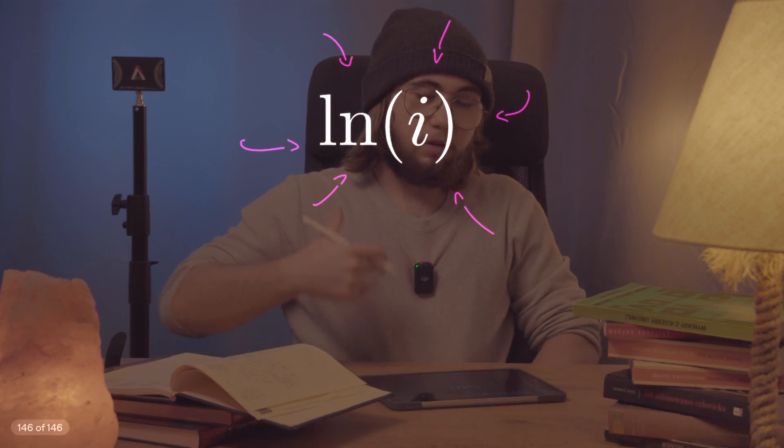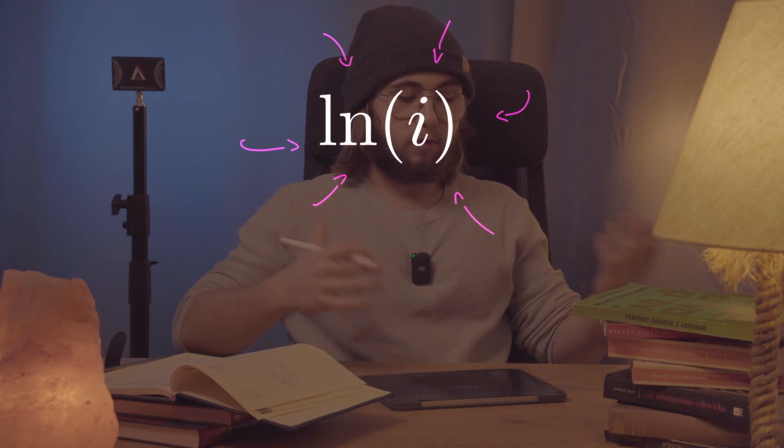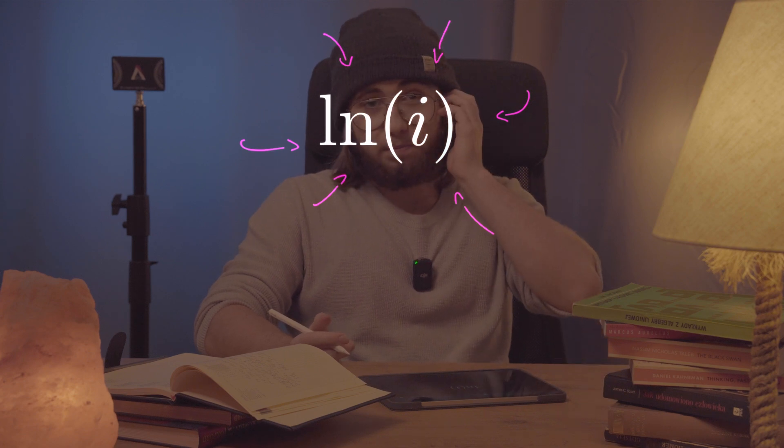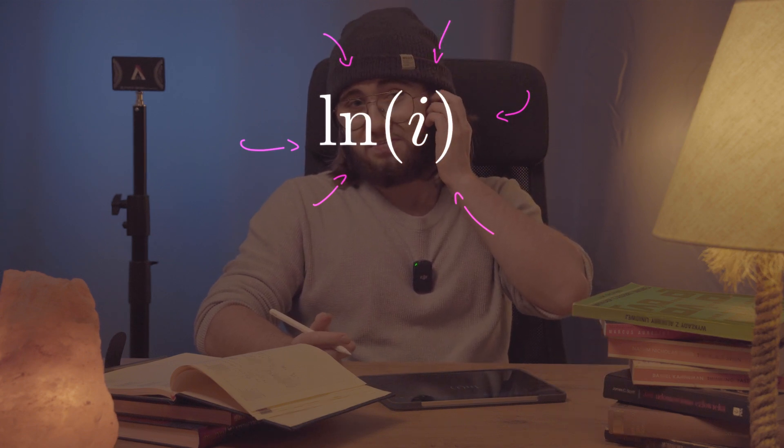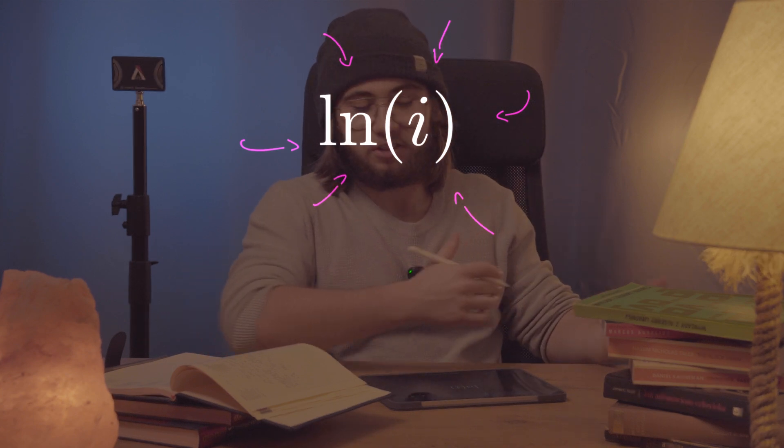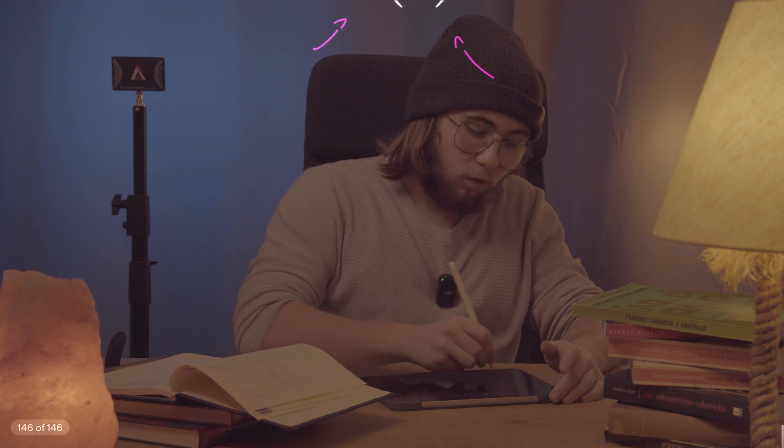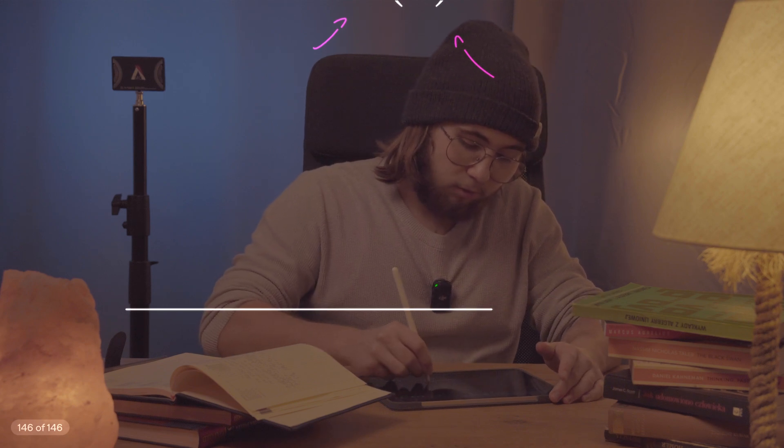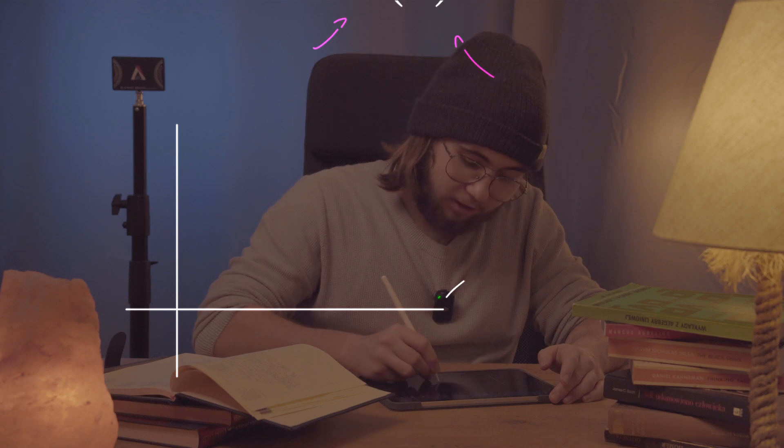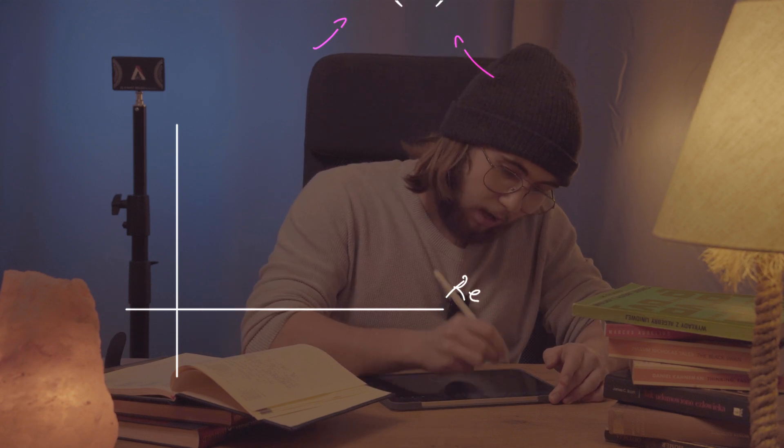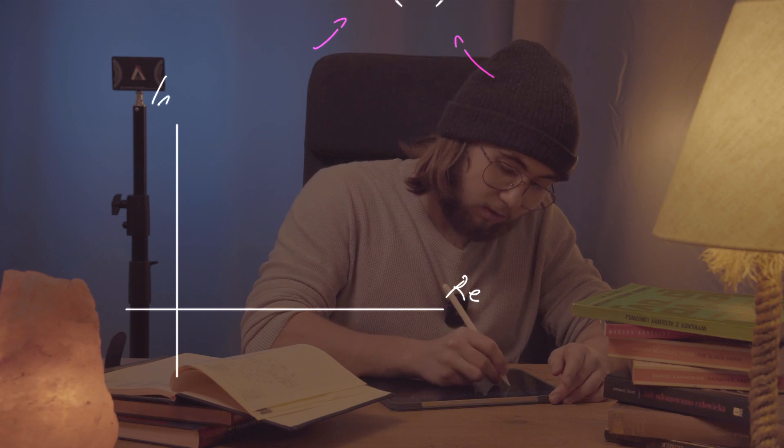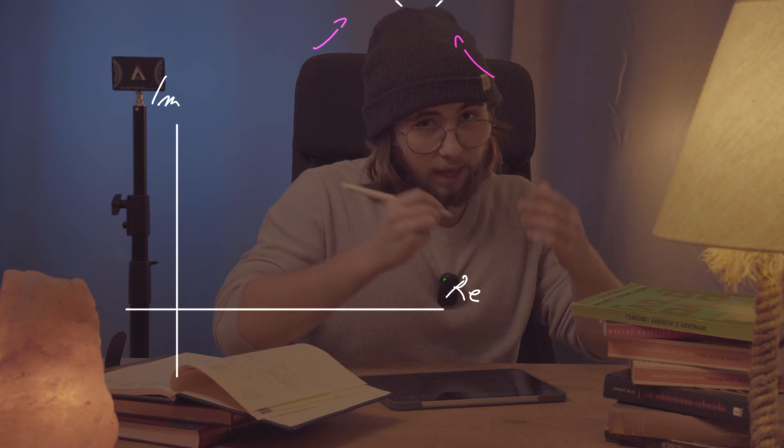So first of all, I would like to find some other way to rewrite i so that maybe we'll be able to get the natural log of that thing easier than of the i itself. So let's draw ourselves the complex plane. It is going to be my real axis, it's going to be my imaginary axis. I'm going to label them. It's going to be the re axis, it's going to be the im axis, the imaginary axis, lovely.